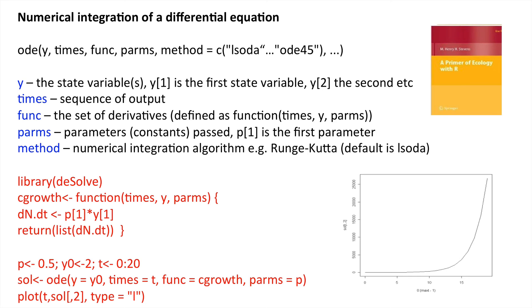With r greater than 0, then what we have is a geometrically increasing population.